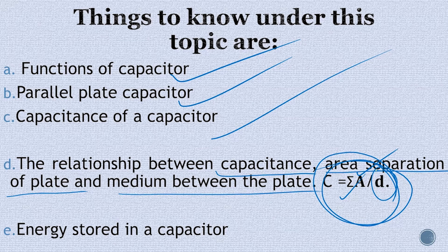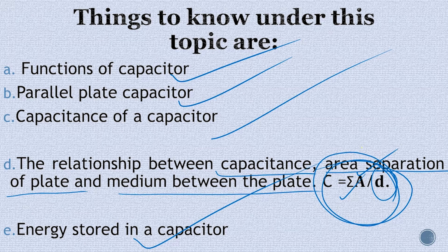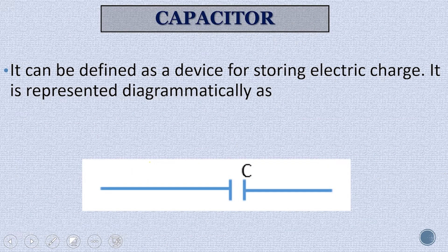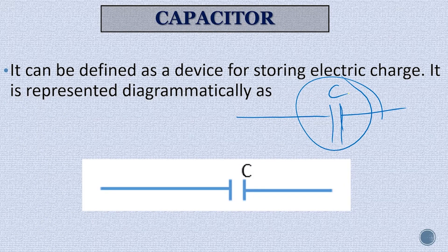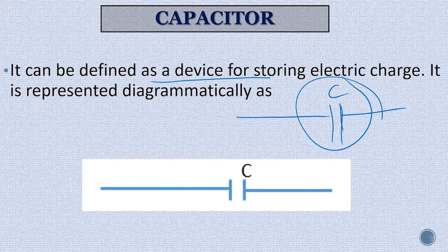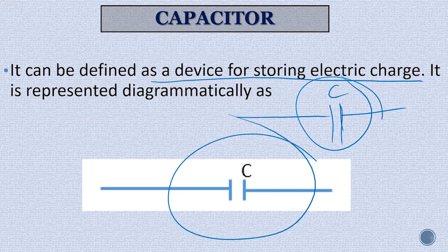Then energy stored in the capacitor — you know it helps in charging our phones and in storing charges. So how does a capacitor do the job of storing charge or energy? We'll see all of that. Capacitor is a two parallel plate separated by a short distance called the separation distance, and the two plates must be parallel plates. This is the symbol of capacitor. It can be defined as a device for storing electric charge.